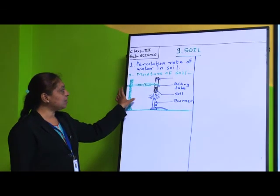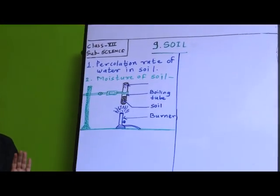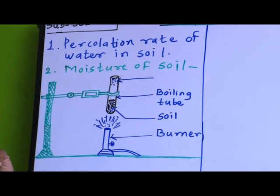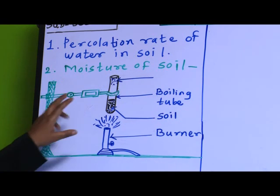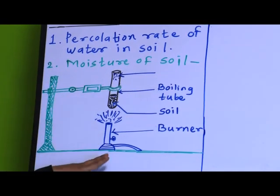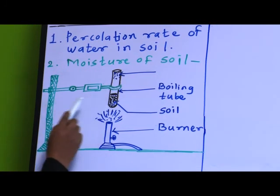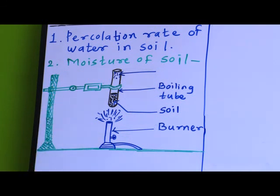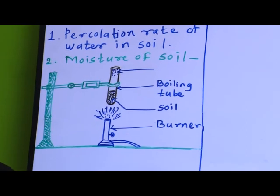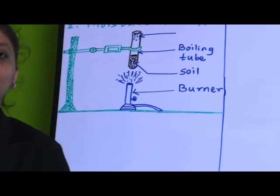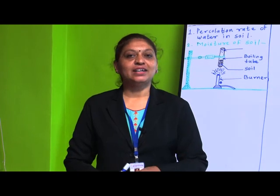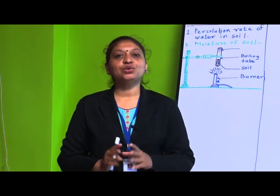This activity can only be performed in the laboratory — you cannot perform it at your home. You have to take a test tube and attach it to a stand, then take a burner. There is a soil sample in the test tube. You have to heat that soil with the burner and then observe what happens.